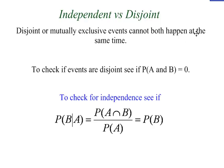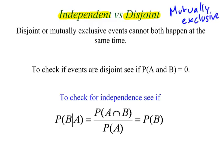A concept in probability that students get confused with is the idea of independence versus disjoint. Disjoint also means mutually exclusive. Disjoint or mutually exclusive events cannot both happen at the same time. To check if events are disjoint or mutually exclusive, we just ask: is the probability of A and B equal to zero? If this is true, then the two events are disjoint or mutually exclusive.